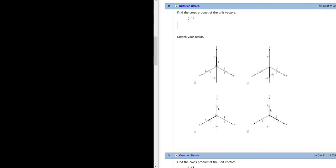Find the cross product of the unit vectors. So we have J cross I. There is a trick to do this problem.